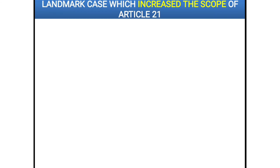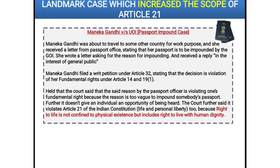Now let's talk about the landmark case of Article 21 that greatly increased its scope — Maneka Gandhi vs. Union of India, also known as the passport impound case. In this case, Maneka Gandhi wanted to travel out of the country for some work. Her passport office received a letter that her passport needed to be impounded by the Government of India, with no valid reason or justification. She wrote back asking for reasonable justification, and received a very vague reply that the passport was impounded in the interest of the general public. Maneka Gandhi then filed a writ petition under Article 32 stating that her fundamental rights under Articles 14 and 19 were infringed.